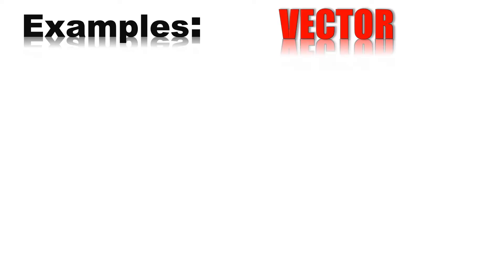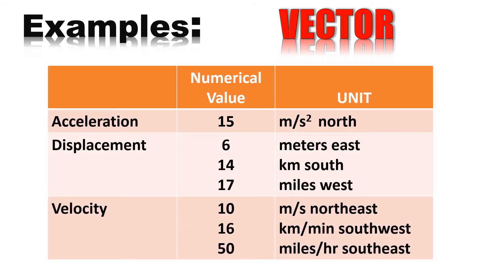Moving on to more examples of vector quantities. In acceleration, ang pwedeng halimbawa ay 15 meters per second north. Sa displacement naman ay pwedeng 6 meters east, 14 kilometers south, and 17 miles west. Sa velocity naman, 10 meters per second northeast, 16 kilometers per minute southwest, or 50 miles per hour southeast.